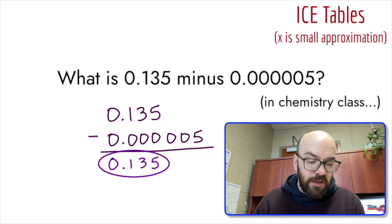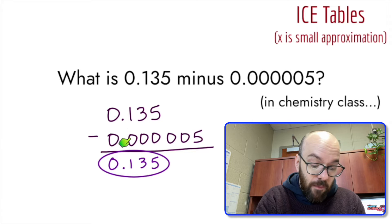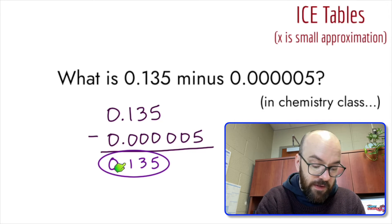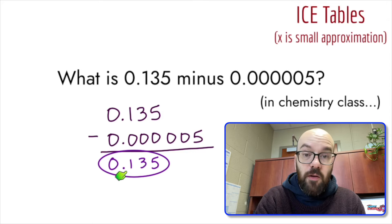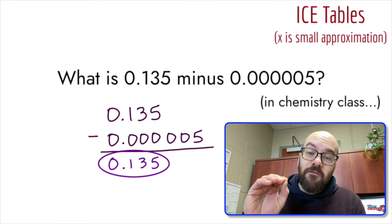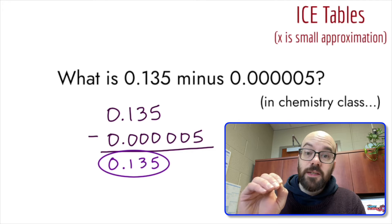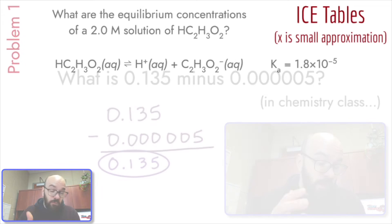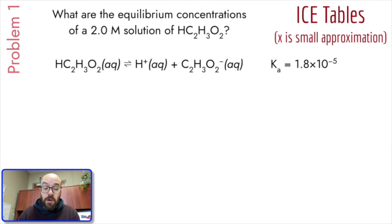Here's the interesting takeaway: 0.135 minus this very, very small number — much less than 0.135 — gives us an answer of still 0.135. So the takeaway is: a number minus a very, very small number gives us that original number again. That concept is going to come up in our first problem.